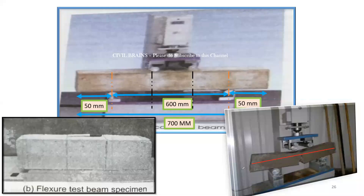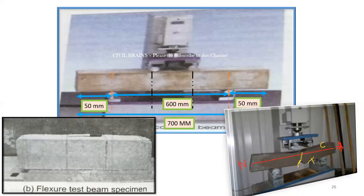There is a layer in the middle of the beam called the neutral axis. Whatever is above the neutral axis is in compression; whatever is below the neutral axis is in tension. Since concrete is strong in compression, nothing will happen in the compression region. Since concrete is weak in tension, it will crack in the tension region. You can see the crack starting from the bottom — the tension region — and propagating upward.